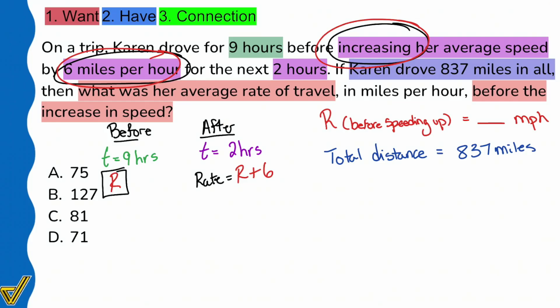We have the before, we have the after, and we know the total distance 837 miles. Where am I going with this? The total distance is going to equal the first distance before the speed increase plus the distance after the speed increase. That's how you get your total. But how do you find distance? That's right: rate times time.